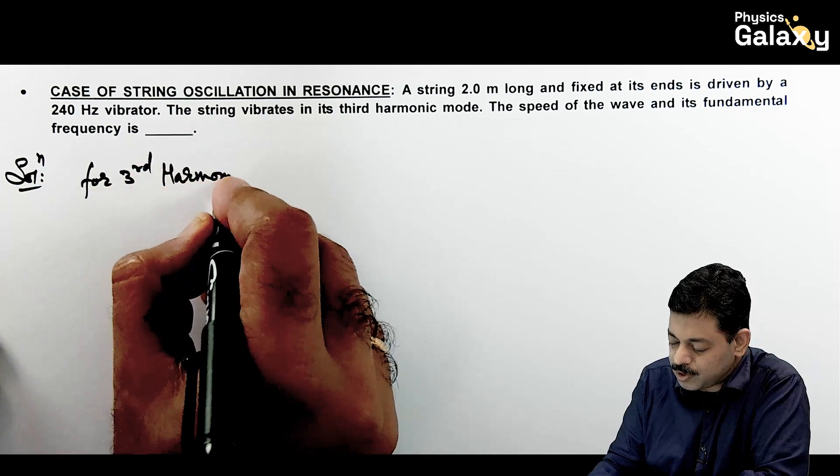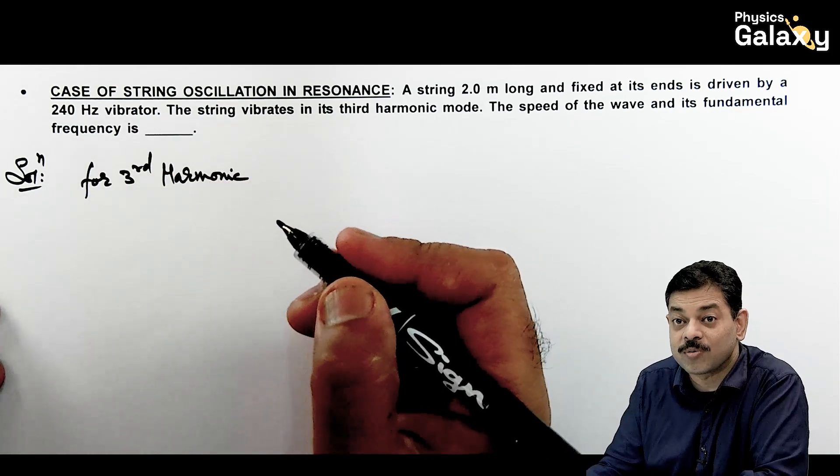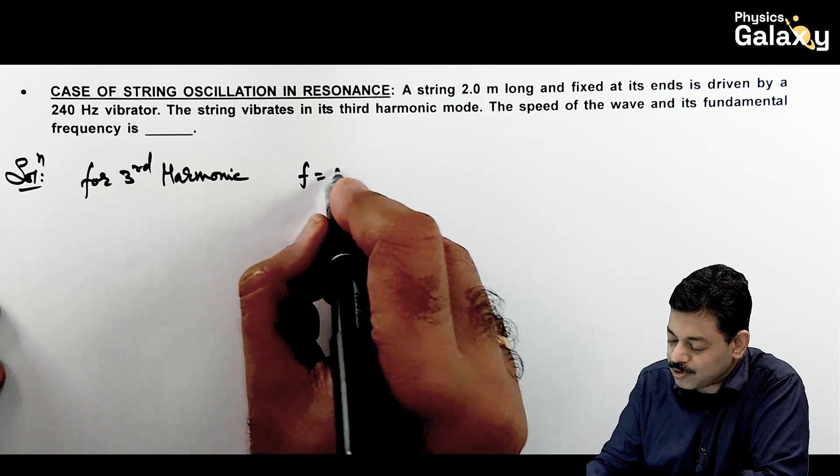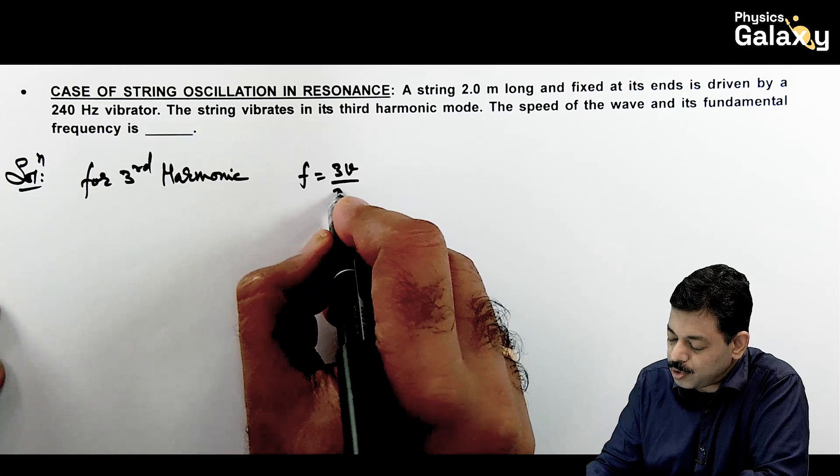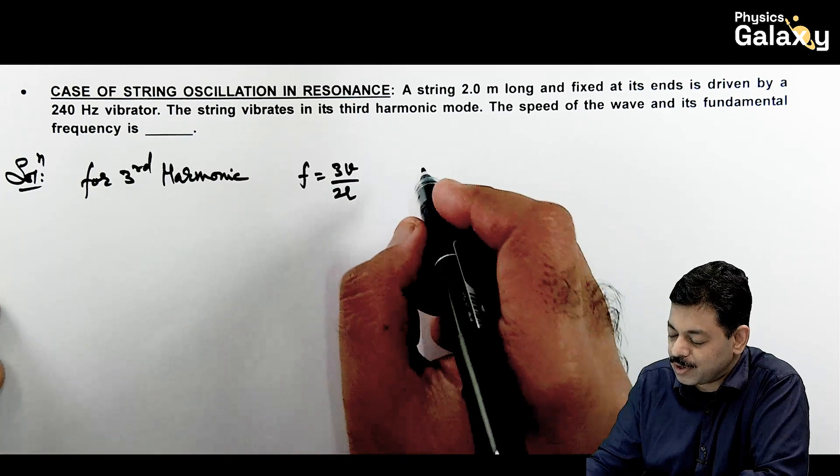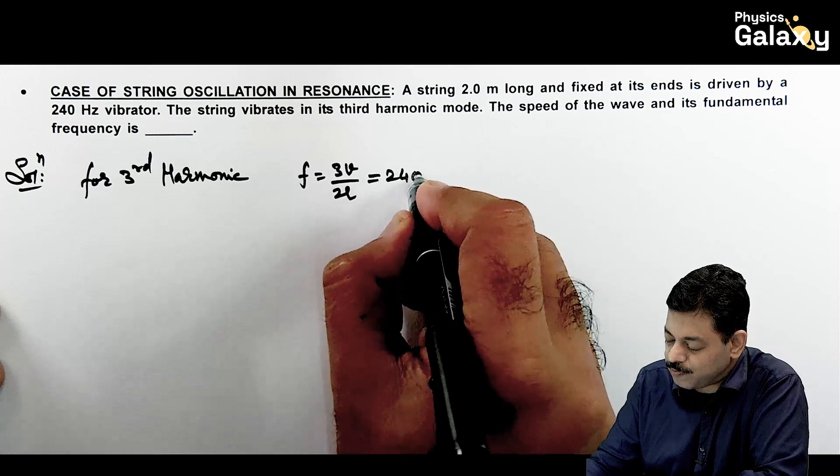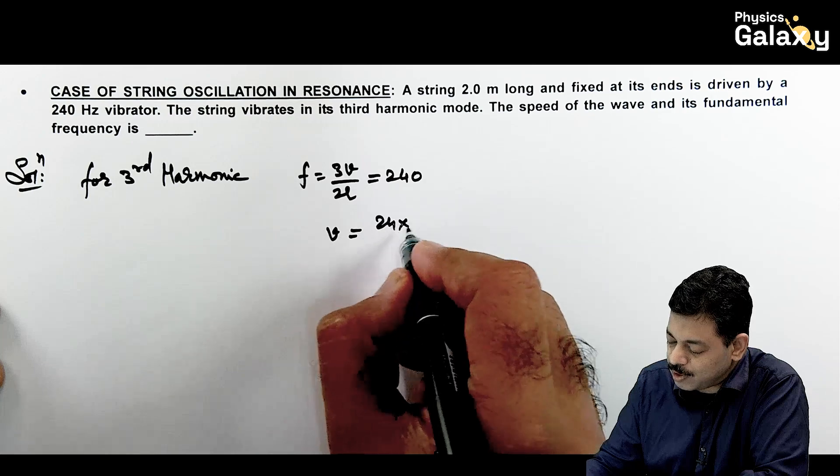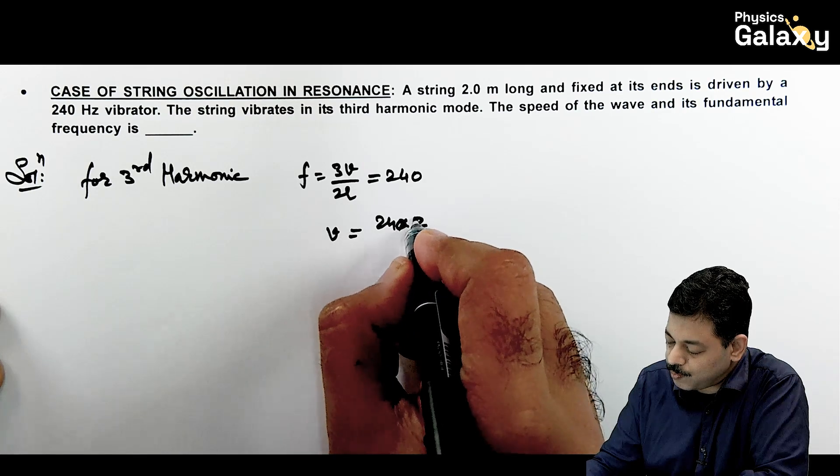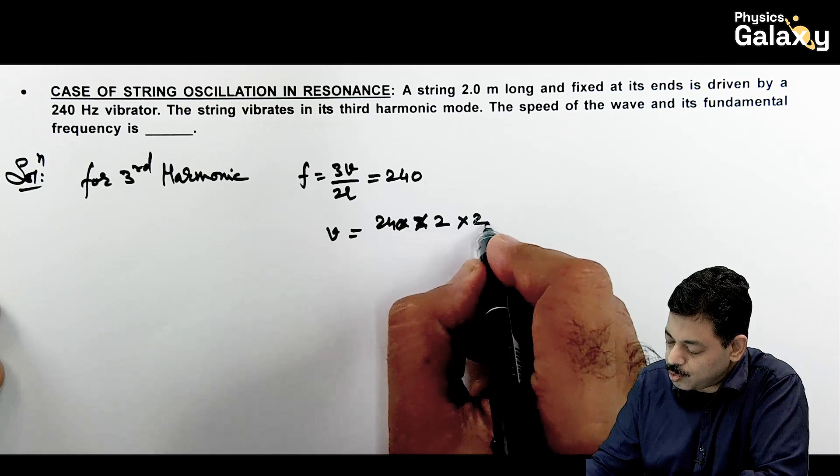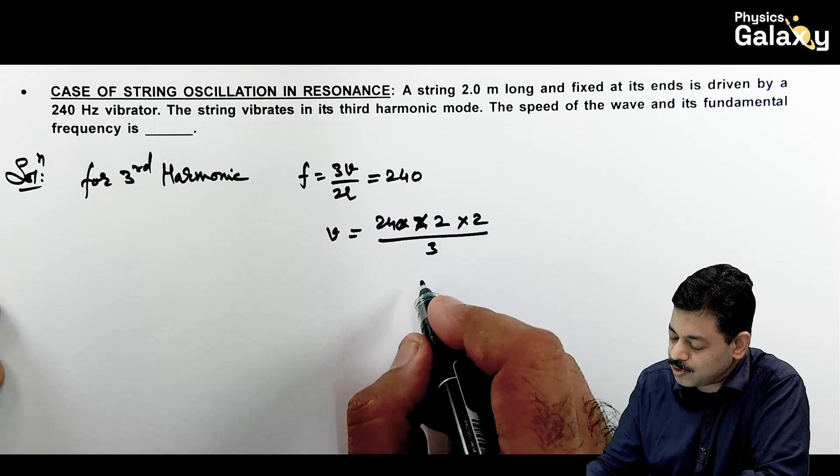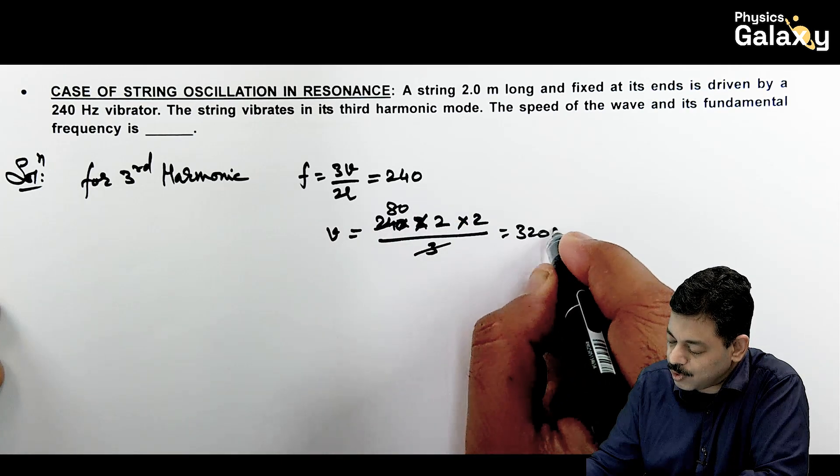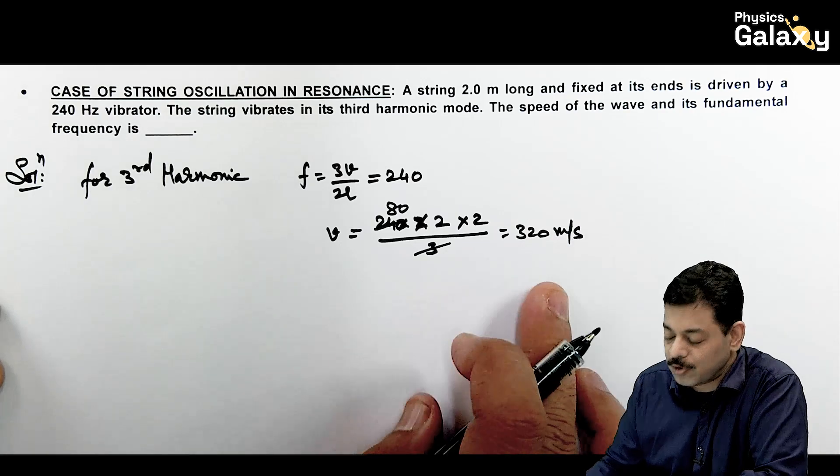So directly you can say for third harmonic, these formulae revision checklist se banake rakhiye because woh sabse zyada aapke liye zaroori hai. So for third harmonic, frequency is given as 3V by 2L in case of a clamped string. So this given to us is 240. So the wave speed, this is 240 multiplied by 2 into 2 divided by 3. So if you check this gives us 80 multiplied by 4 is 320 meter per second. That is the wave speed we are getting.